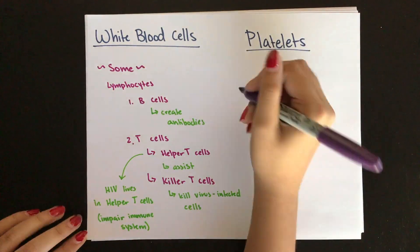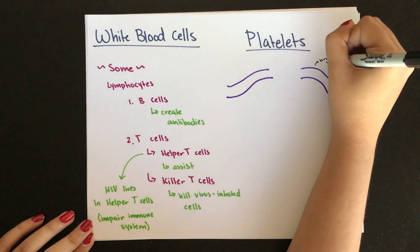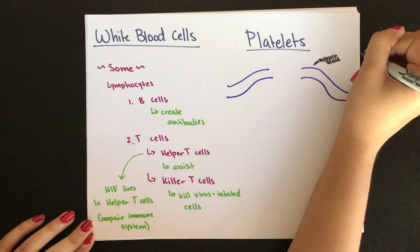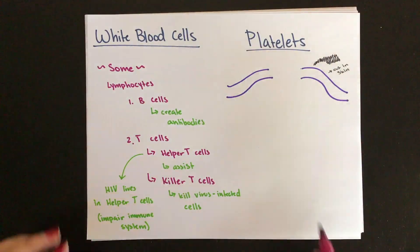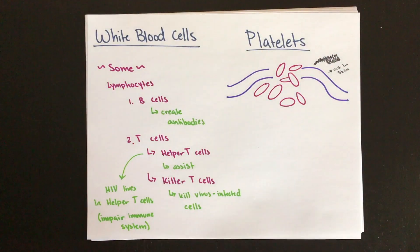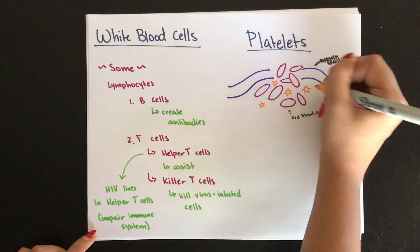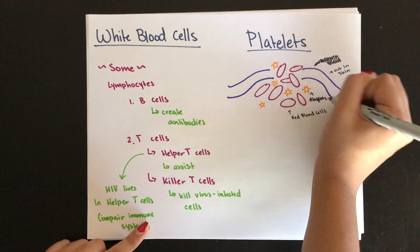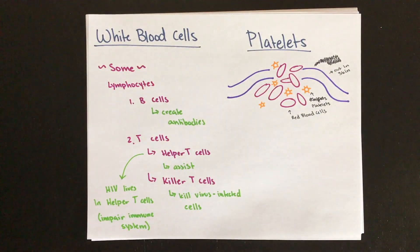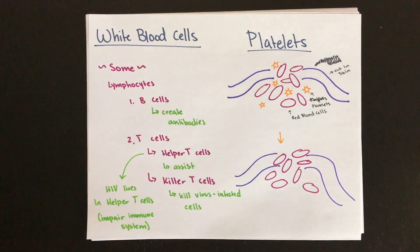Platelets are small cell fragments used in blood clotting because they release a chemical that initiates a series of events that convert fibrinogen to fibrin. Fibrin are insoluble threads that create a web of blood cells and form a clot to stop any further bleeding.